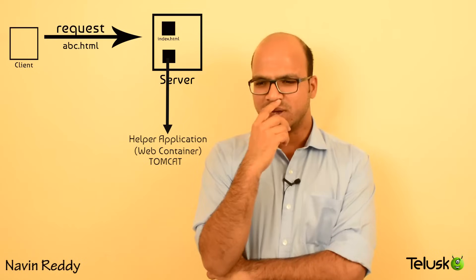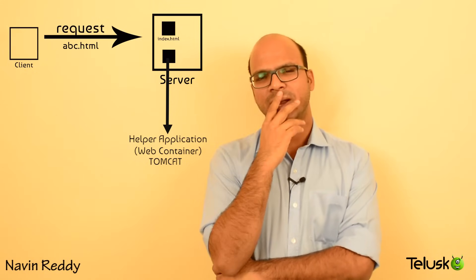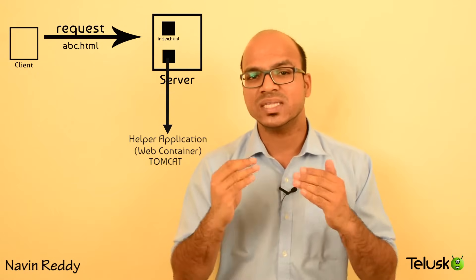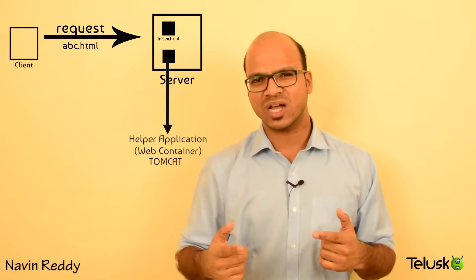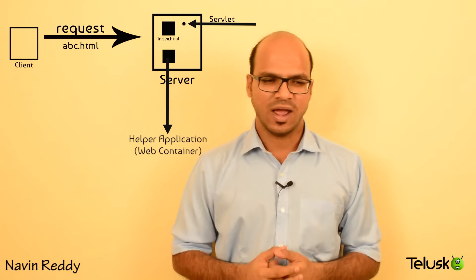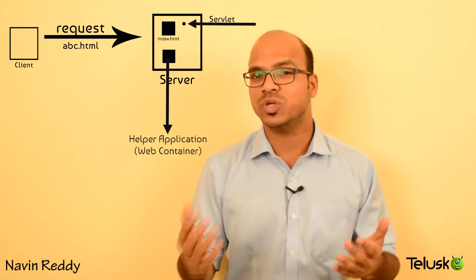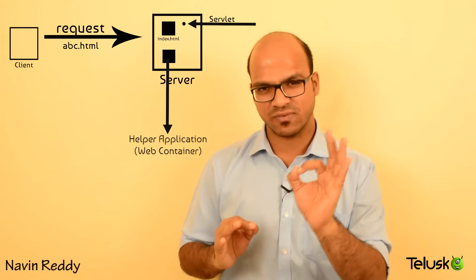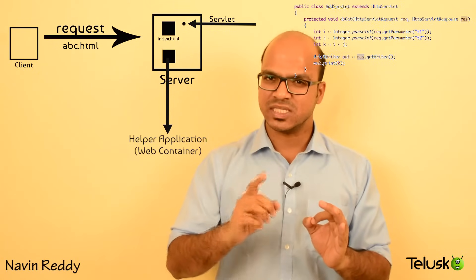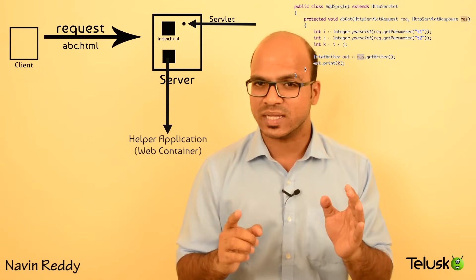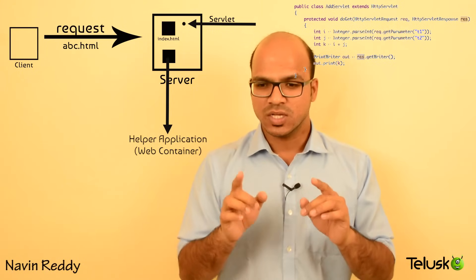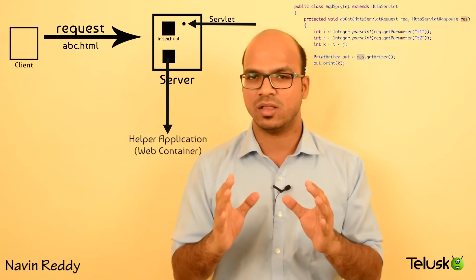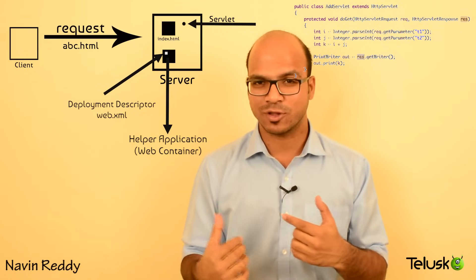When a request goes to Tomcat, Tomcat says it got a request for, say, abc.htm, but if there's no such page, it has to build it. So that request goes to a servlet. For example, if I want to add two numbers, I'll have a servlet named AddServlet. When a request for abc.htm comes in, the page that should be called is that servlet.